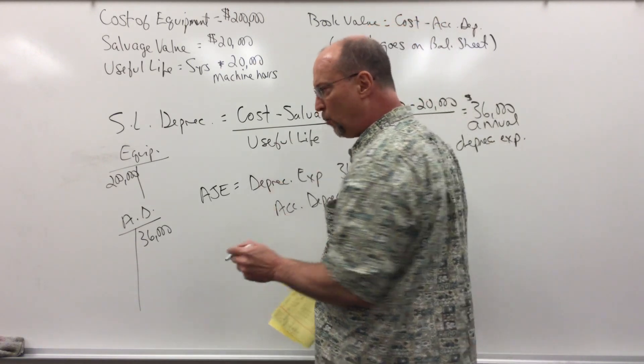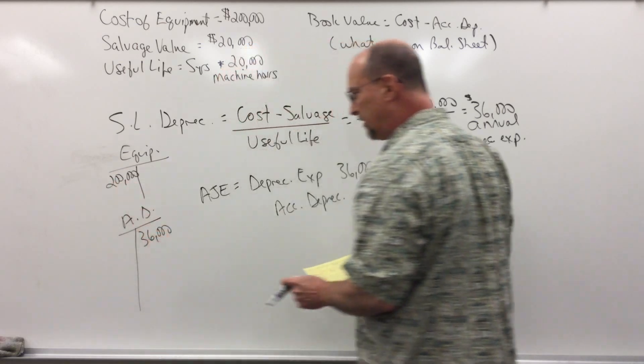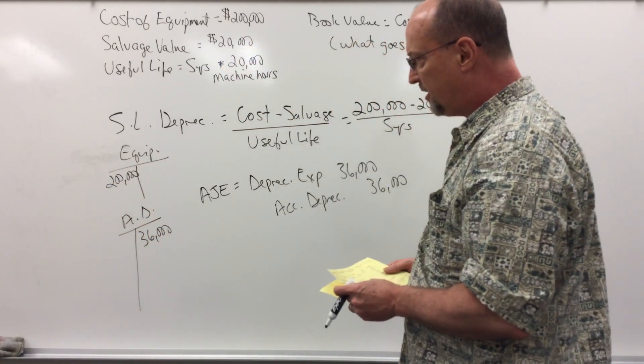So at the end of year one, my book value was $200,000 minus $36,000, which would be $164,000.